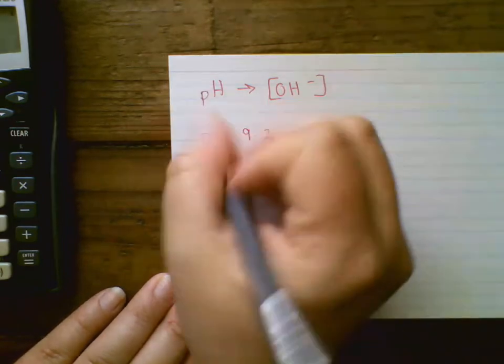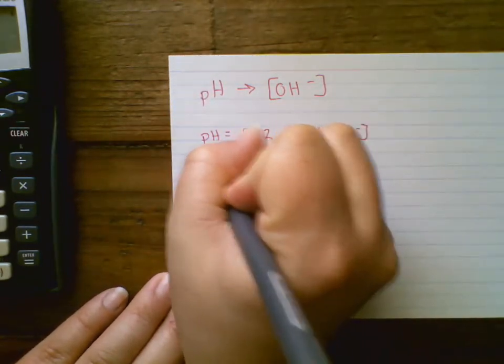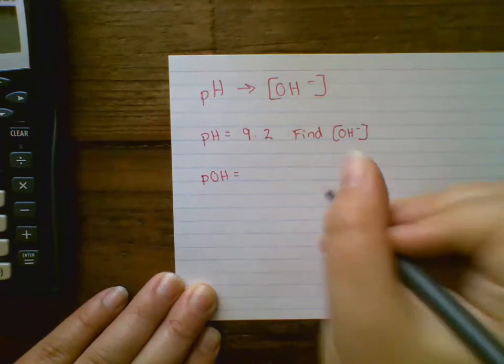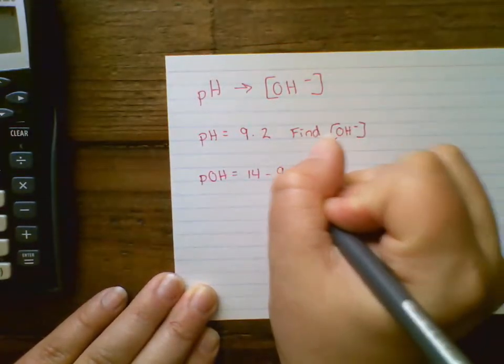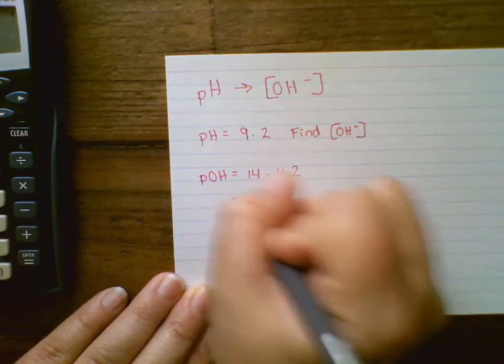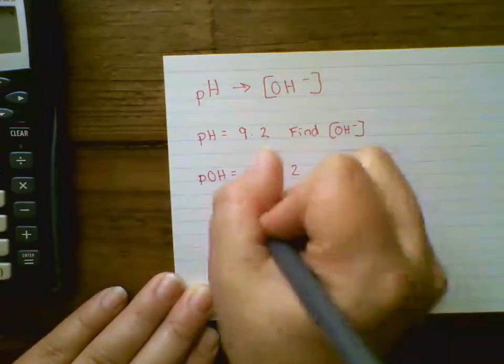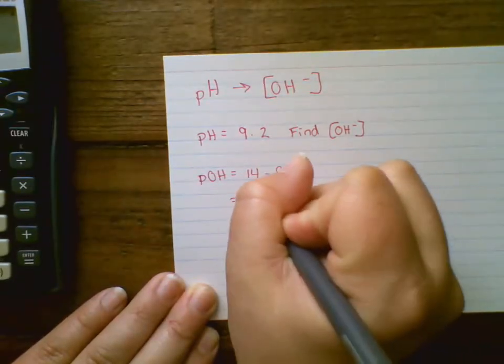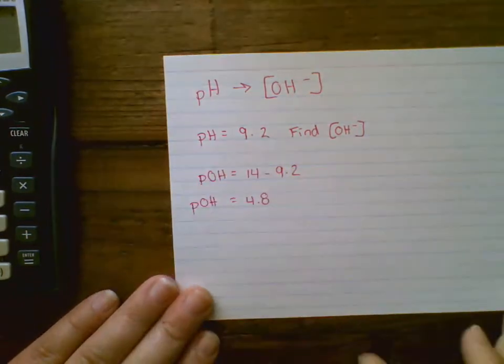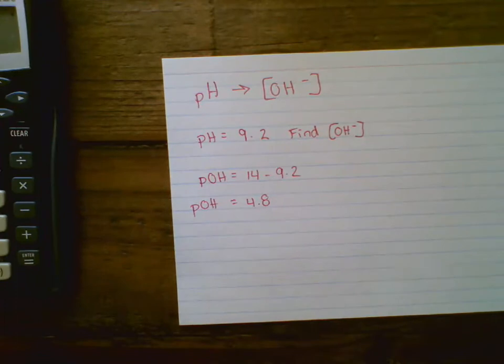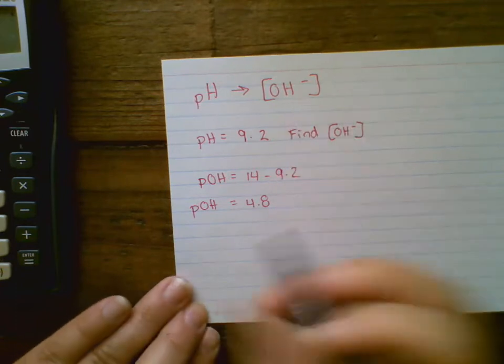So to find the pOH, I'm going to take 14 minus my pH. So 4.8 is going to be my pOH. You can absolutely use a calculator on that, but that's going to get your pOH and then from there you're going to find your OH minus concentration.